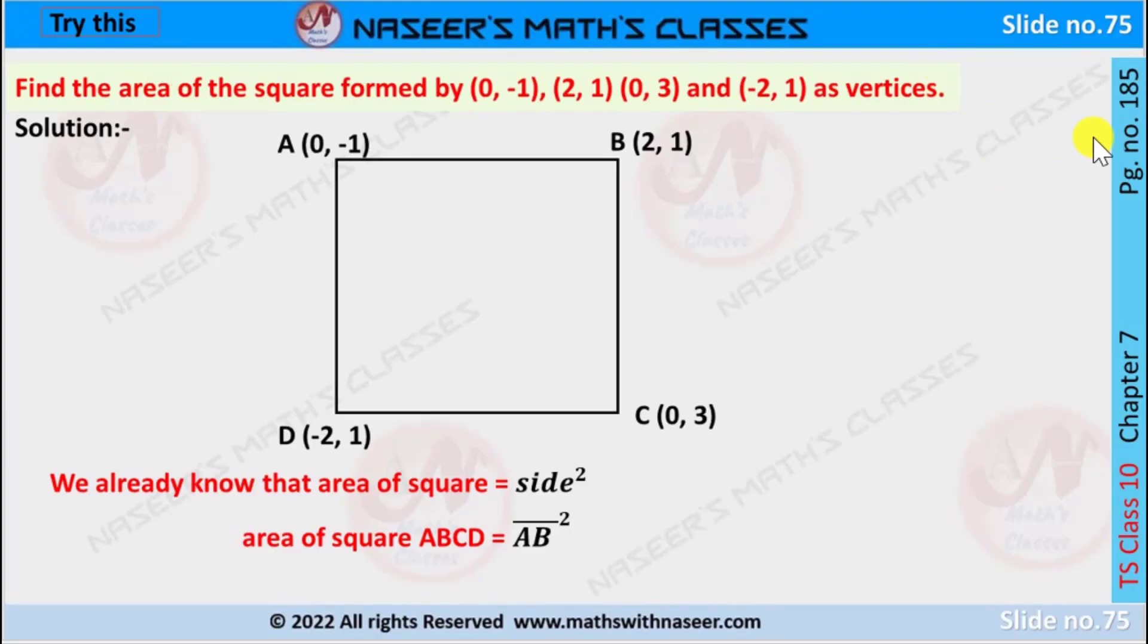Try this, page number 185, chapter 7 coordinate geometry. Find the area of square formed by (0, -1), (2, 1), (0, 3), and (-2, 1) as vertices. Then draw a rough diagram of a square with vertices A, B, C, D.